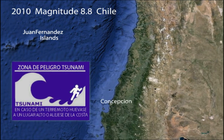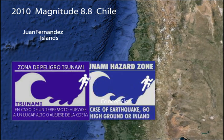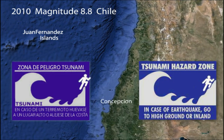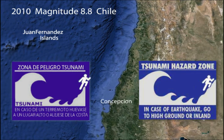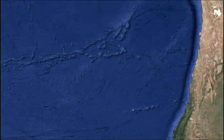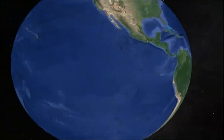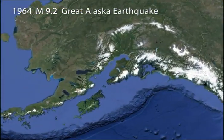Alerted by strong ground shaking, coastal residents evacuated to high ground. Unaware of the danger, many vacationers did not evacuate and became victims of the tsunami. Our third example introduces splay faulting during the rupture.